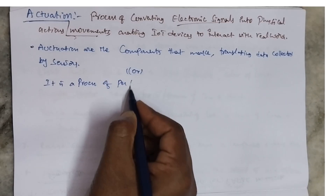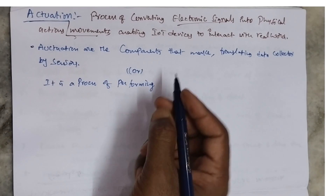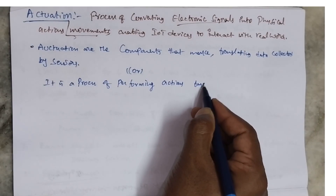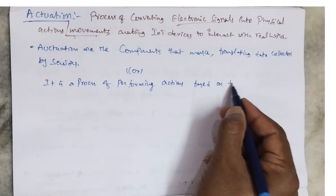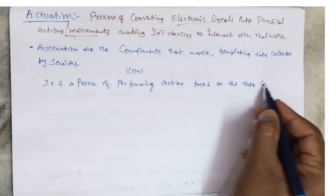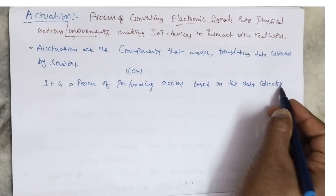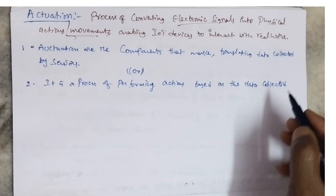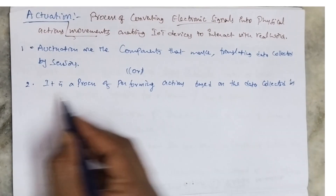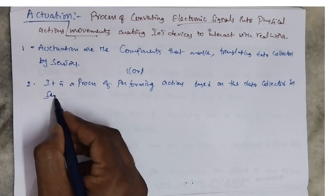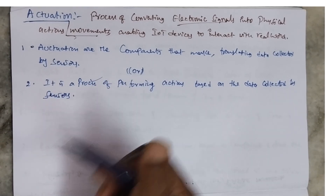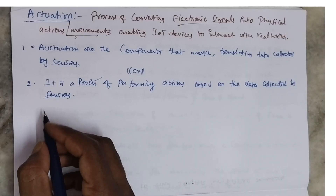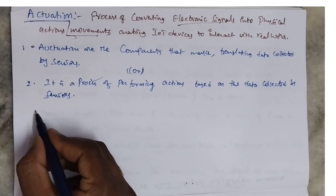In simple terms, we have another definition: activation is a process of performing actions based on the data collected by sensors. Activations perform the actual actuation tasks.